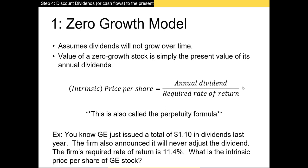Let's look at an example. GE just issued a total of $1.10 in dividends last year and announced it would never adjust the dividend. The firm's required rate of return is 11.4%. What is the intrinsic price per share of GE stock? Let's move over to Excel to work this out.